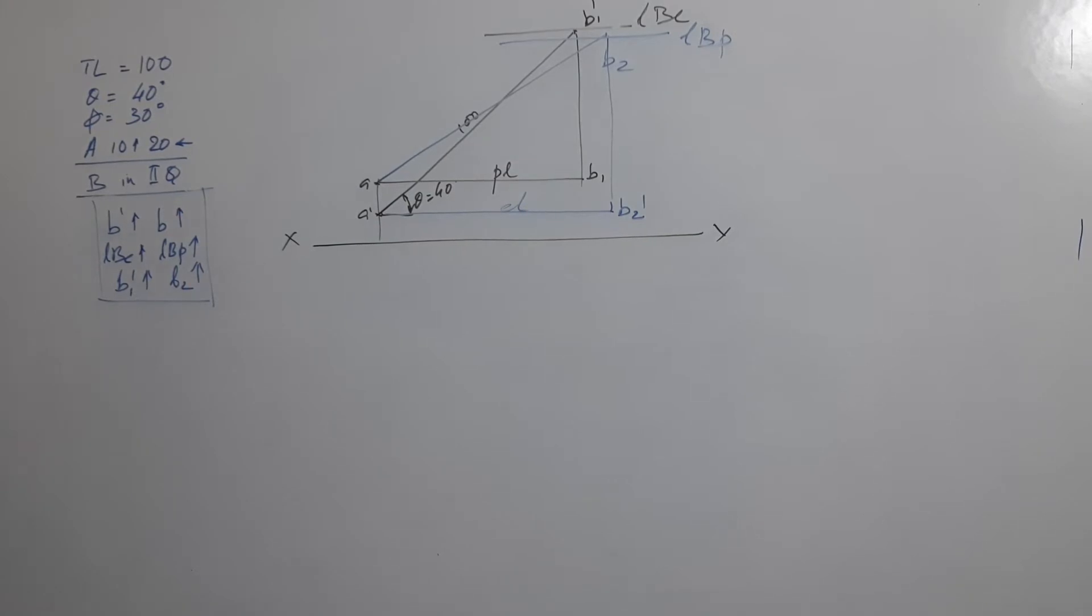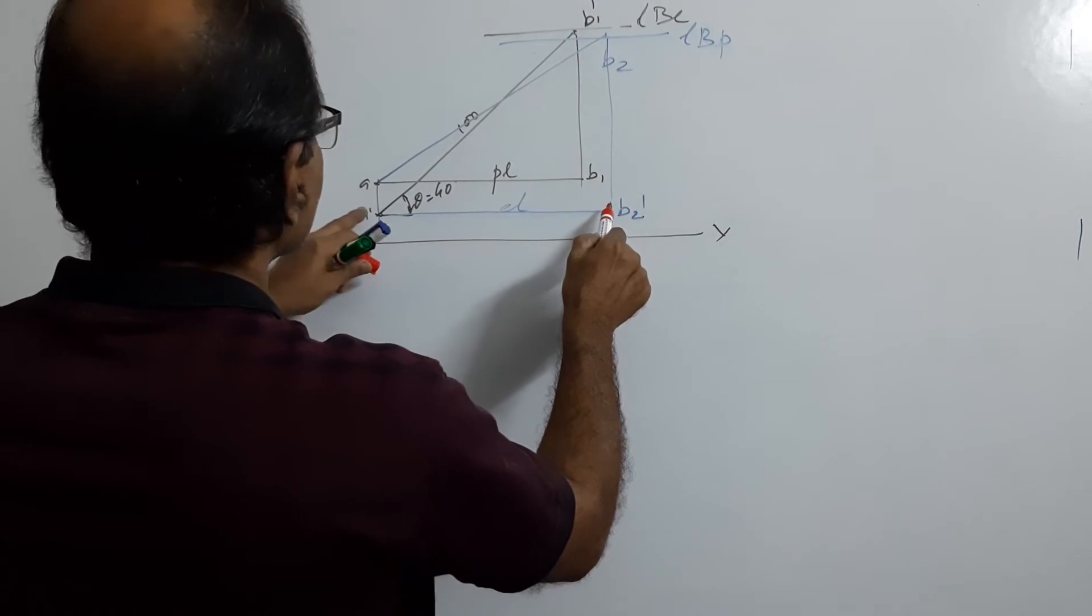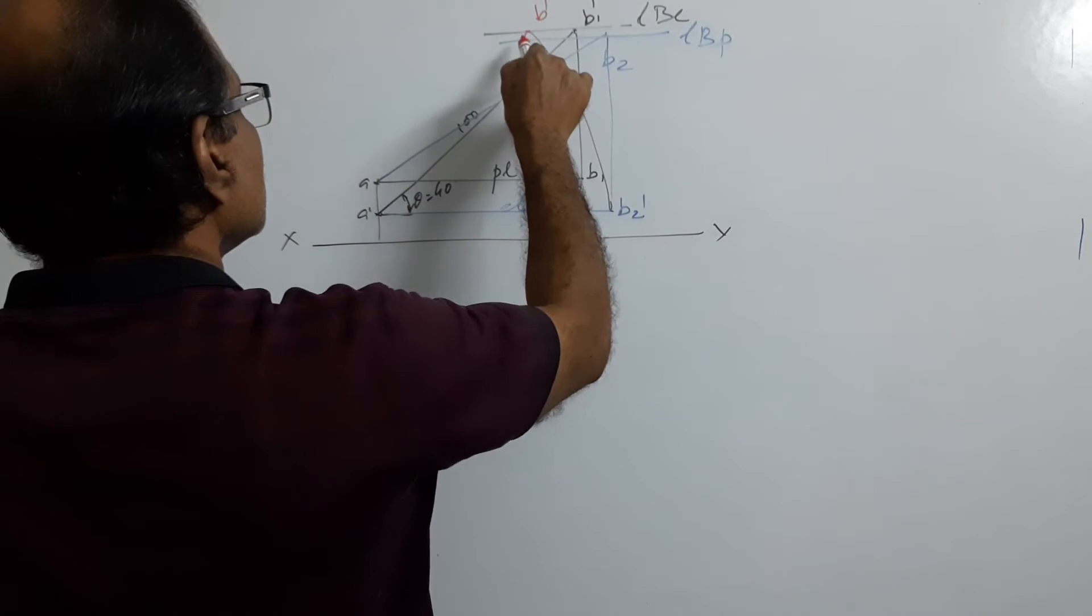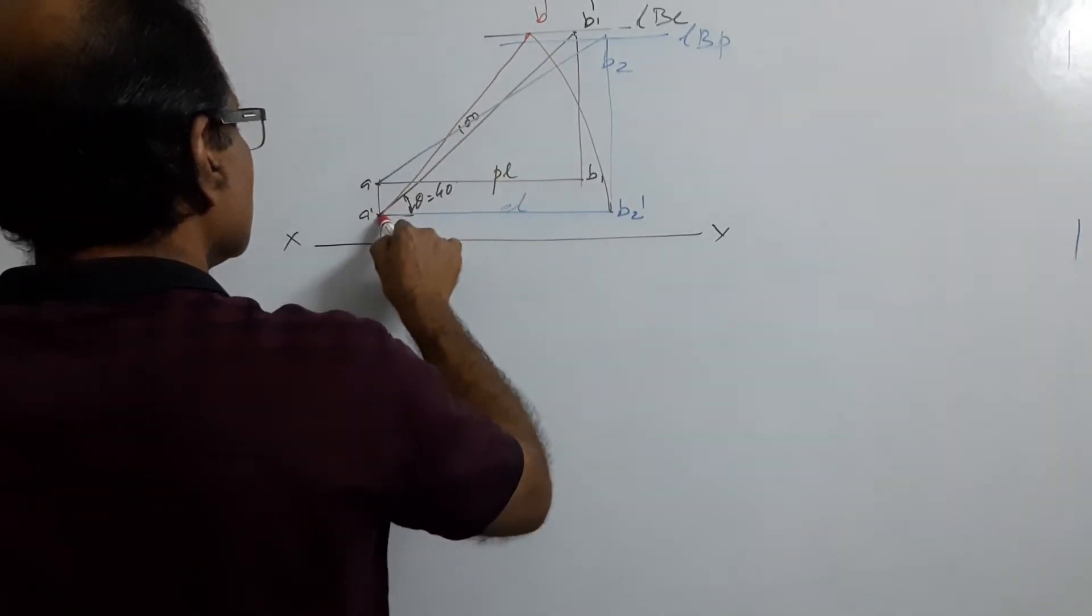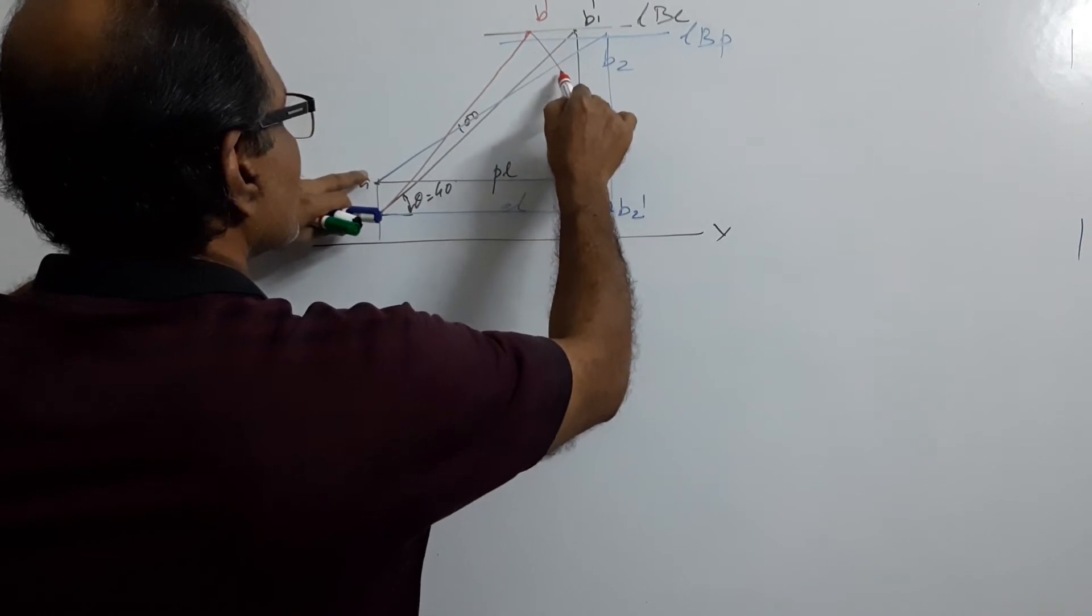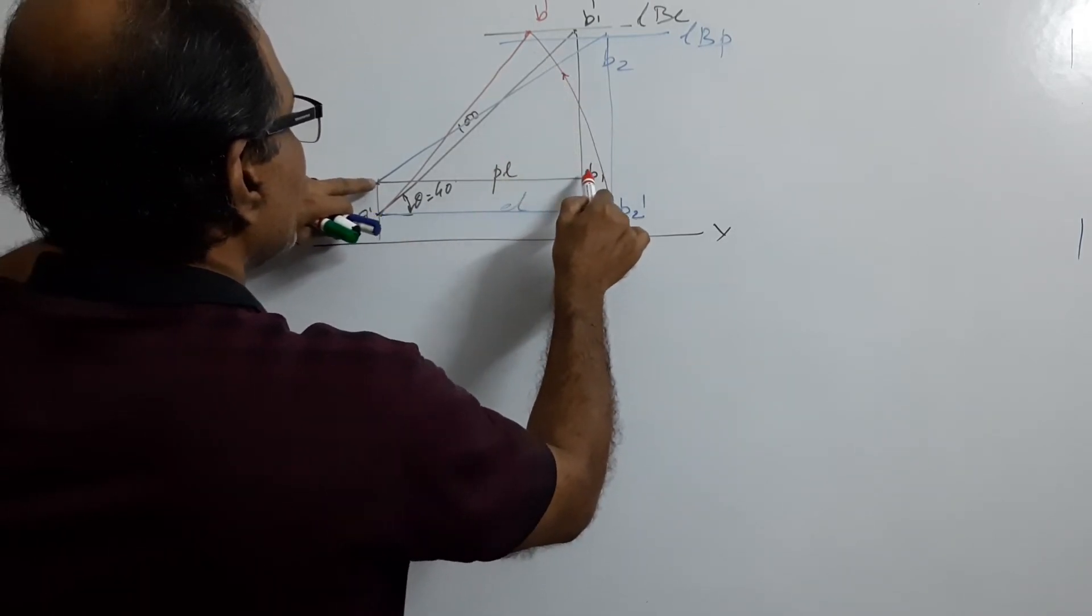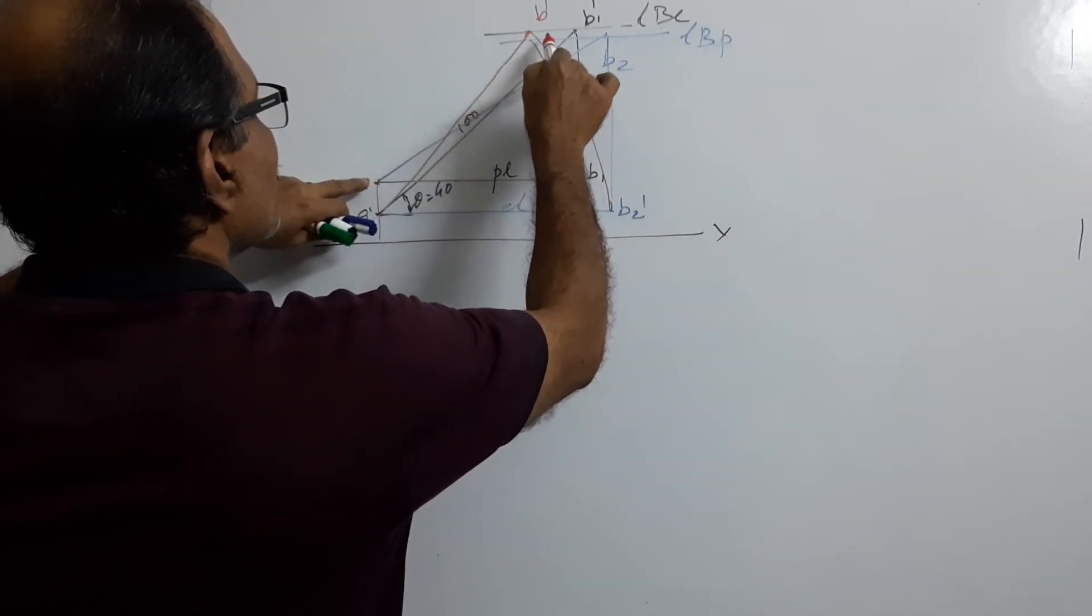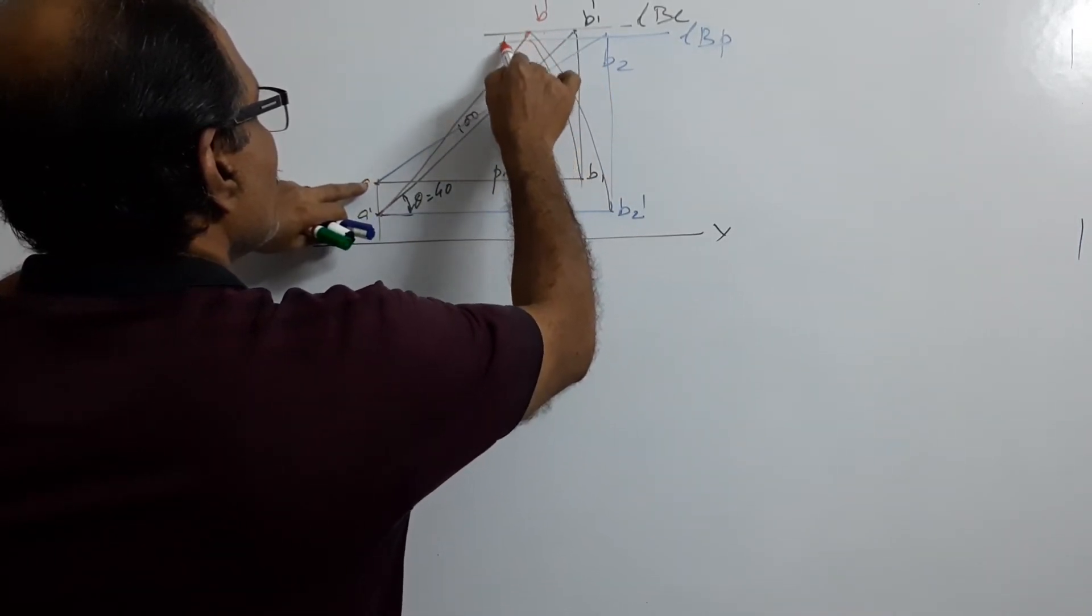Now you have to combine them. How do we combine them? A dash A center, elevation length radius, cut on LB. B dash A dash, B dash is the elevation. A center, plan length radius, cut on arc. B.